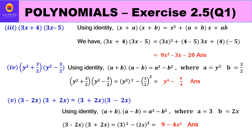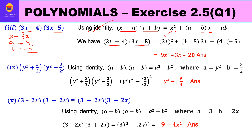In the third part, we have (3x + 4)(3x − 5). Comparing with identity (x + a)(x + b), here x is 3x, a is 4, and b is −5. Since the identity has all plus signs, we include minus inside the bracket with b. Substituting: (3x)² + (4 + (−5)) × 3x + 4 × (−5).